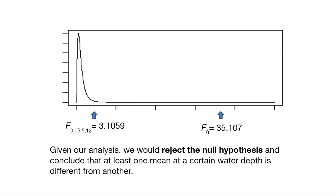Given our analysis, we would reject the null hypothesis and conclude that at least one mean at a certain water depth is different from another. If we were to look that up in R, we would look up the critical value at a level of significance of 0.05 with 5 and 12 degrees of freedom — 5 being the number of treatments minus 1, and 12 being the number of observations minus the number of treatments minus 1. That critical value would be 3.1, and since our F value of 35.107 is far greater than 3.1, we reject the null hypothesis.